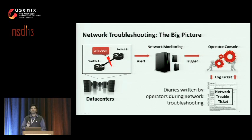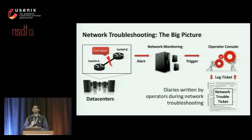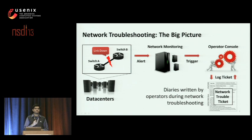Let me first show you how network troubleshooting is done today. Our focus is on data center environments comprising thousands of routers and switches. In such an environment, consider two devices connected by a link. When this link goes down, an alert is logged in a network monitoring system. This in turn triggers an alarm to an operator console. These operators maintain their progress during debugging in network trouble tickets. Think of these tickets really as diaries written by network operators during troubleshooting. Our goal is to analyze these diaries to improve network management.